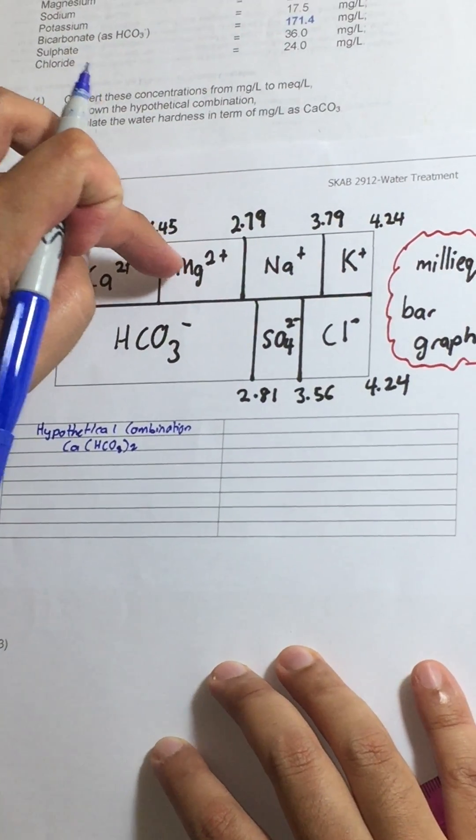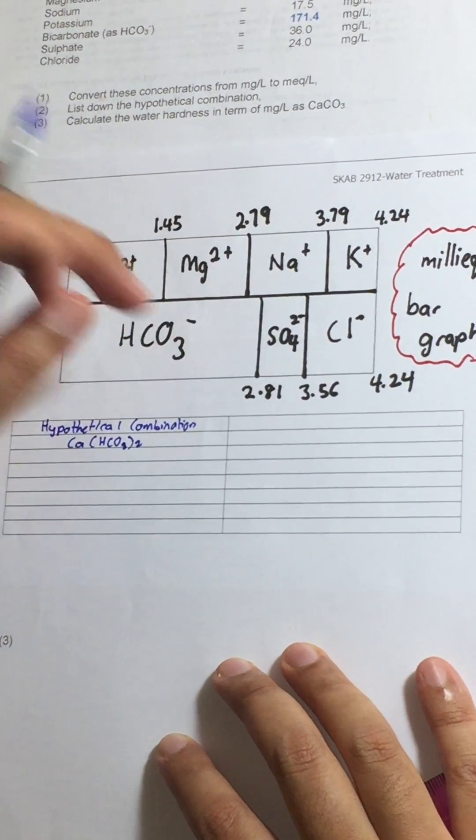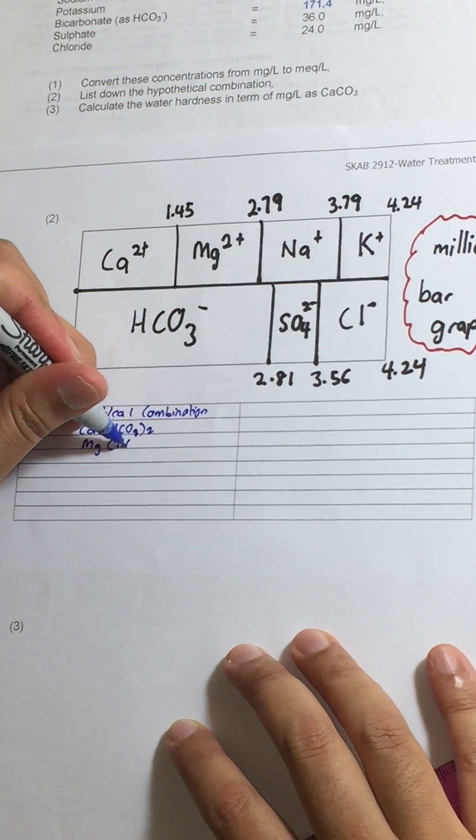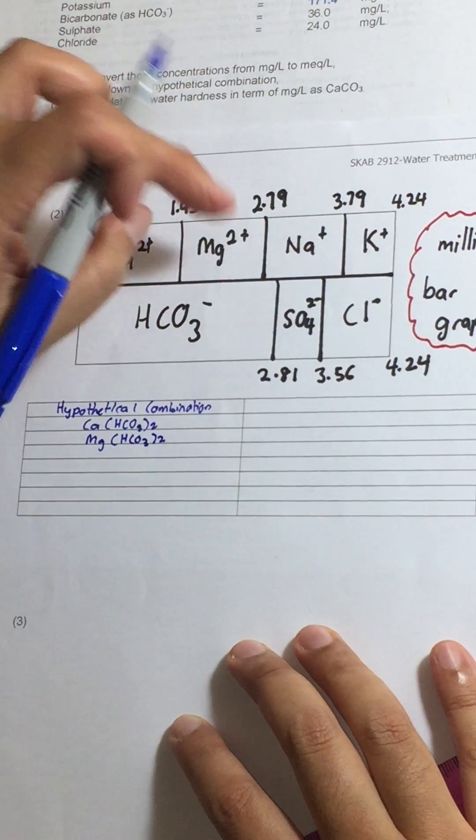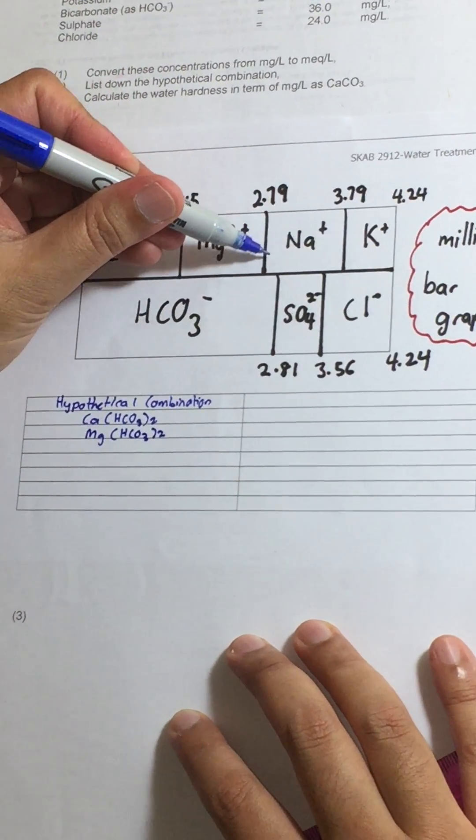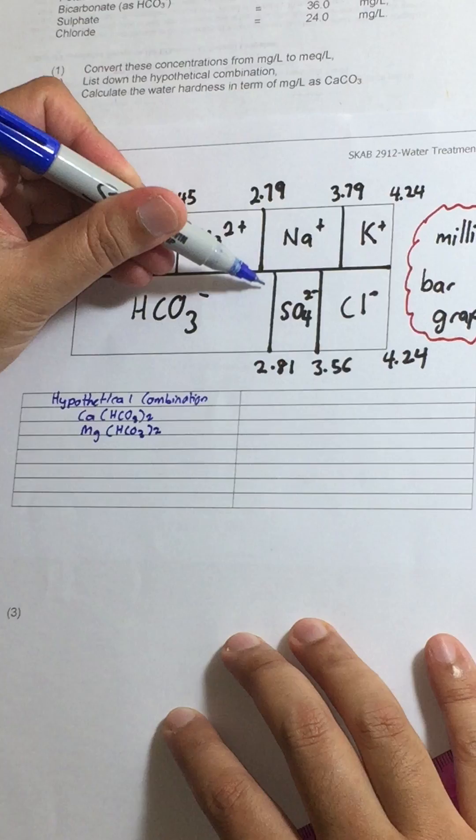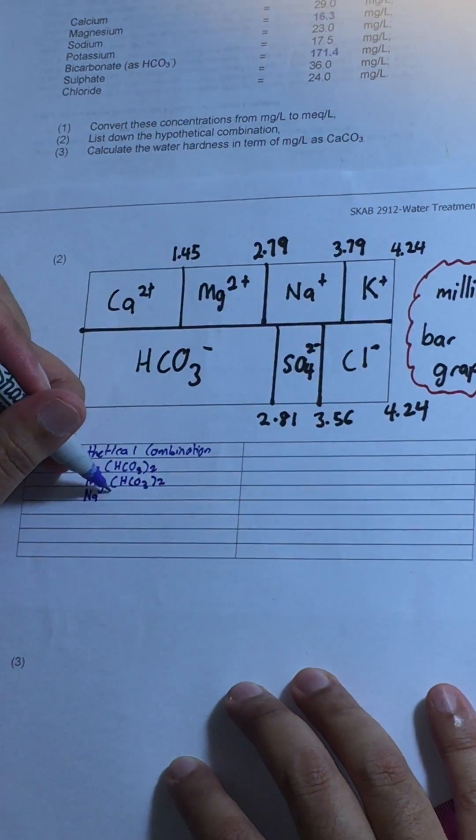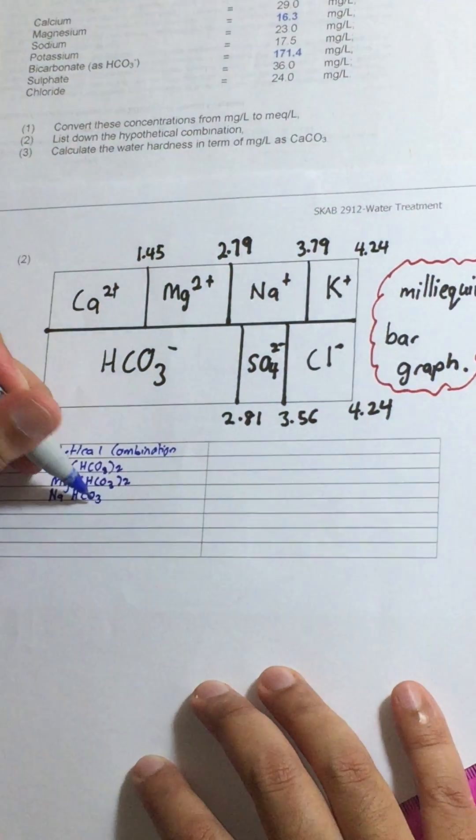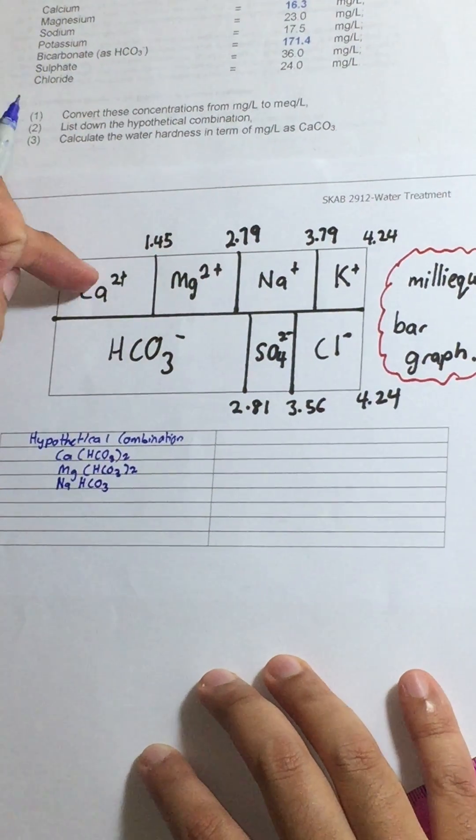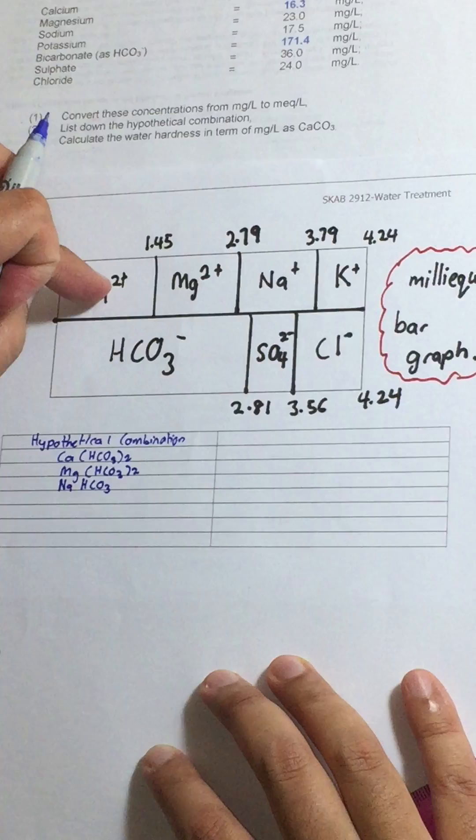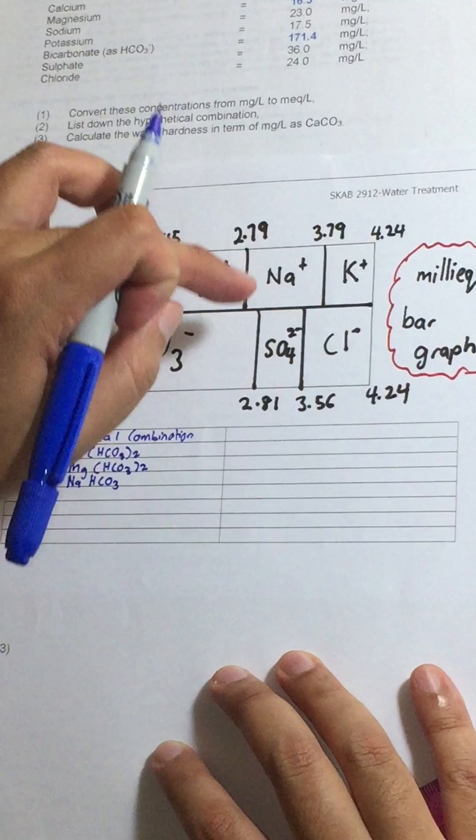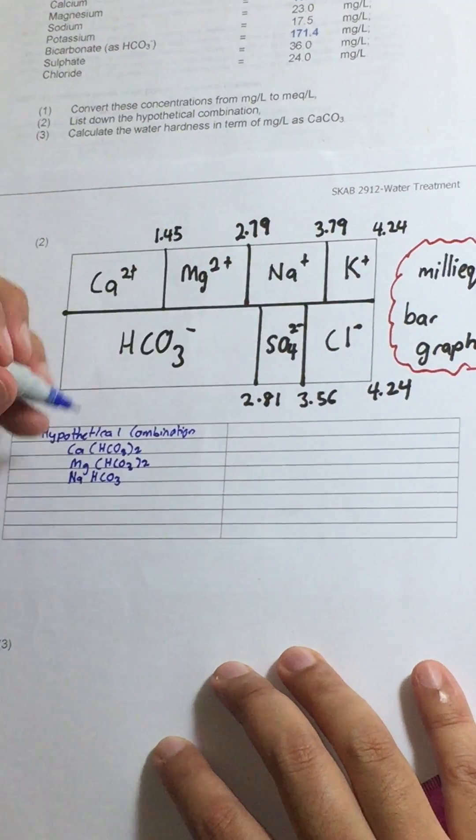We also have magnesium bicarbonate. So write down that thing too. We have sodium bicarbonate. Calcium bicarbonate, magnesium bicarbonate, sodium bicarbonate. We also have sodium sulfate.